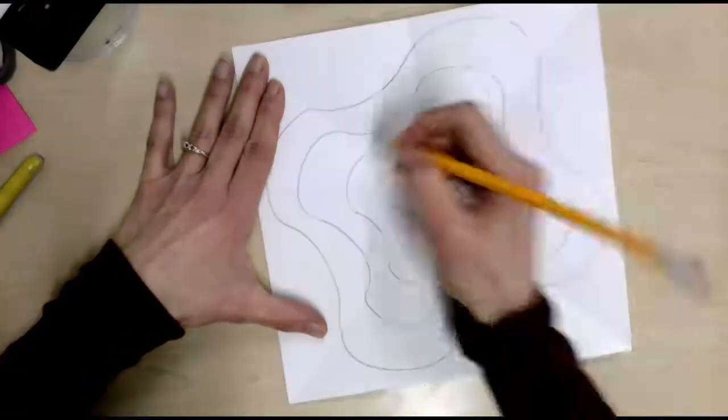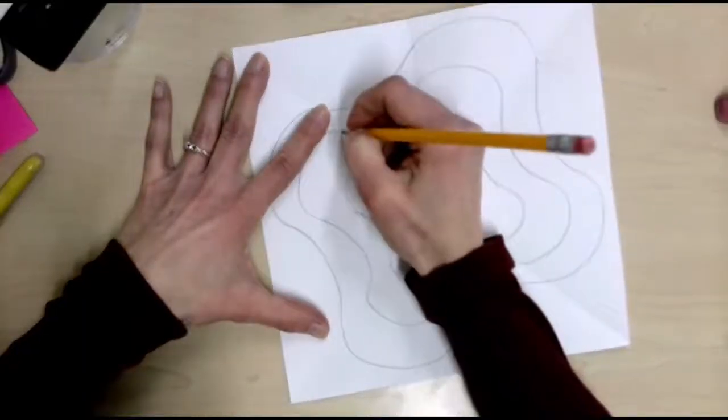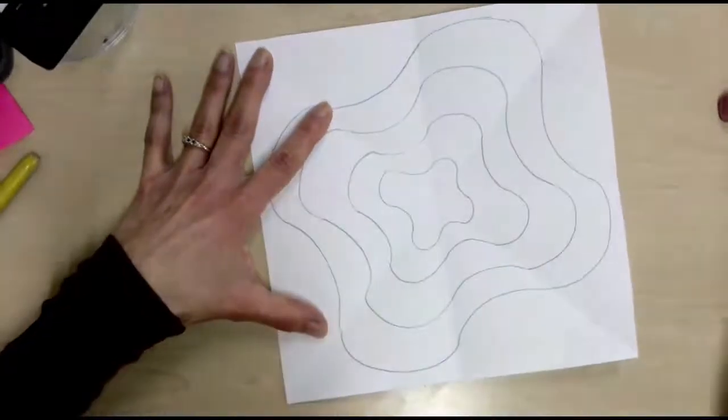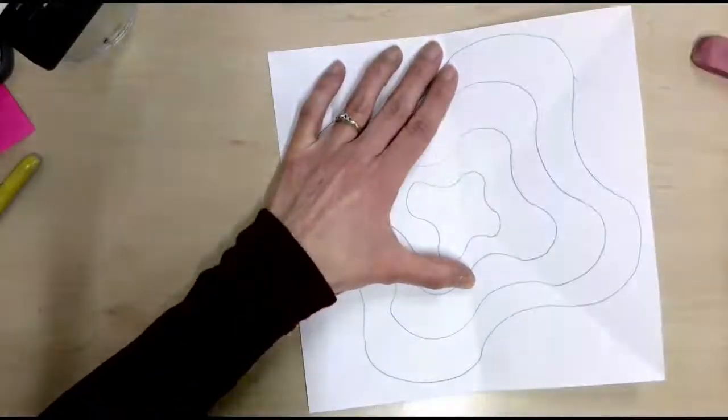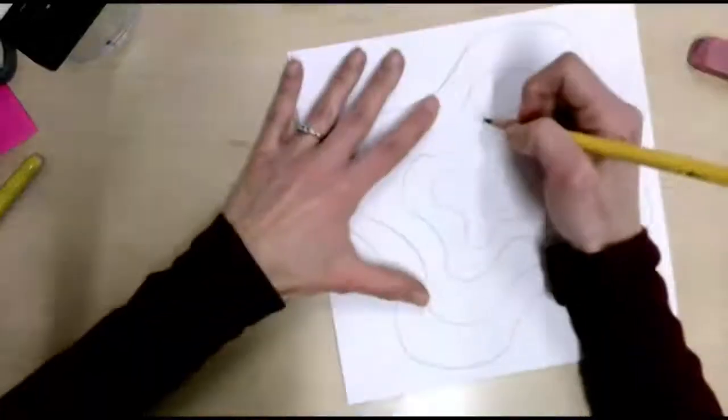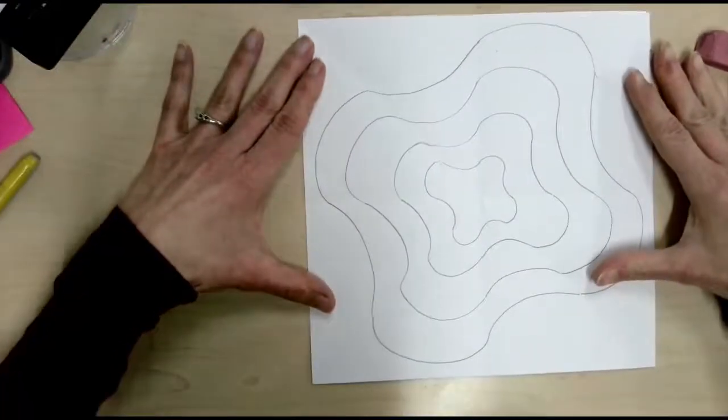So I might go back in here and just check and make sure all the lines are curving and they're not angular looking at all. This one looks like it needs a little adjustment as well. So this is what we have so far.